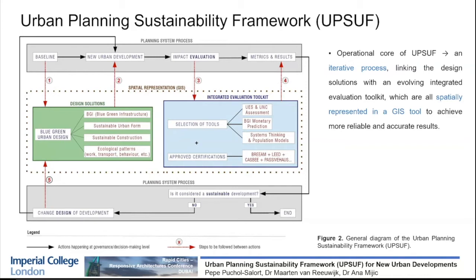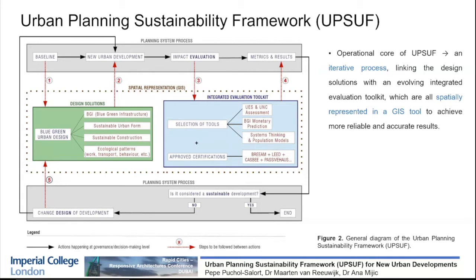To see in more detail the different parts of this framework, we can see how the UK planning system works generally. There are a series of urban stakeholders, mainly divided into private and public sector, and into decision makers and statutory consultees. The main figures are developers and urban planners, who design the urban development project and submit it for planning application once cost and viability are assessed. At this stage, local planning authorities or residents decide whether to grant planning permission, based on local plans and neighbourhood plans. This also follows a kind of iterative process similar to our framework.